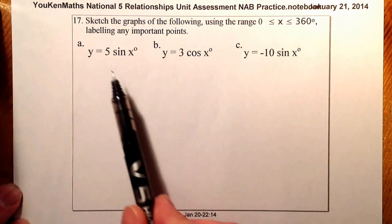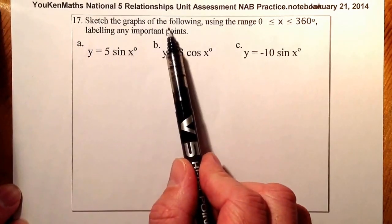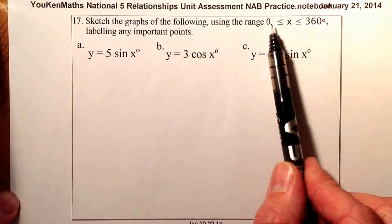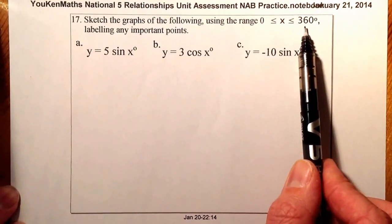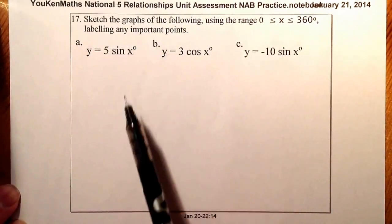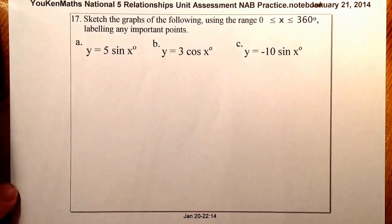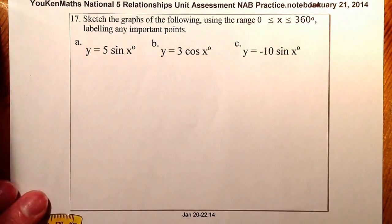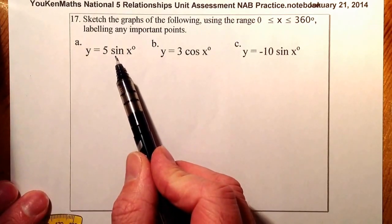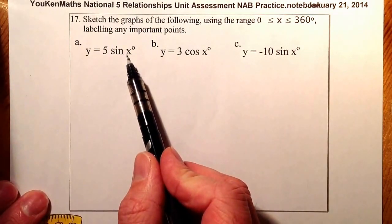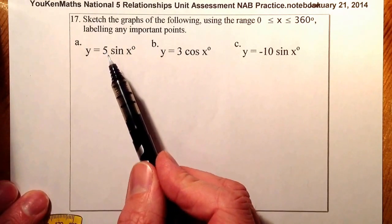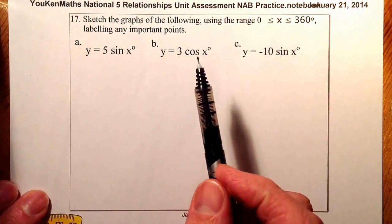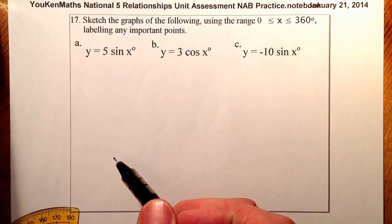What we've got to do here is sketch the graph of the following, looking at the range between 0 and 360 degrees, and we'll need to label any important points on this graph. So I've got y is equal to 5 sine x. The graph of y equals sine x on its own will go up to 1, down to minus 1, and it has a period of 360 — that's a graph you should be familiar with.